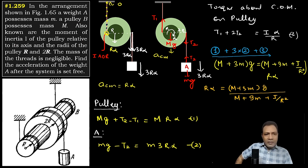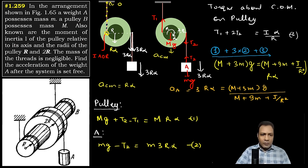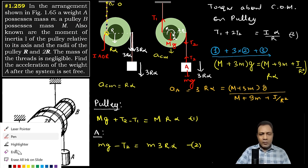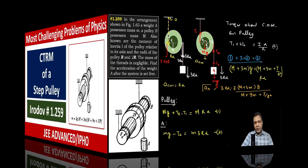Since the acceleration of weight A is 3r·alpha, the final answer is: a_A = 3(M + 3m)·g / (M + 9m + I/r²).